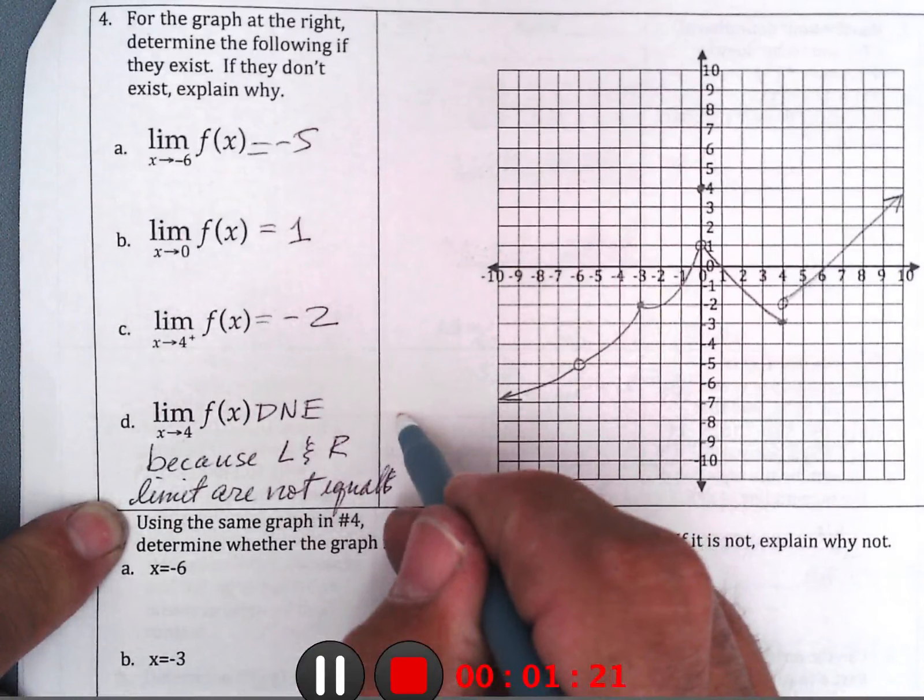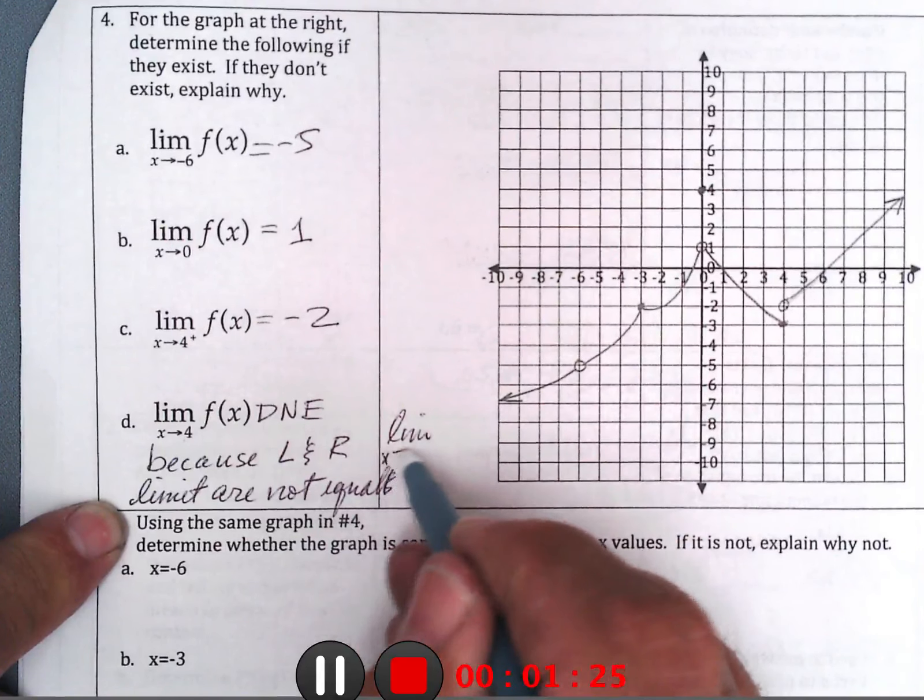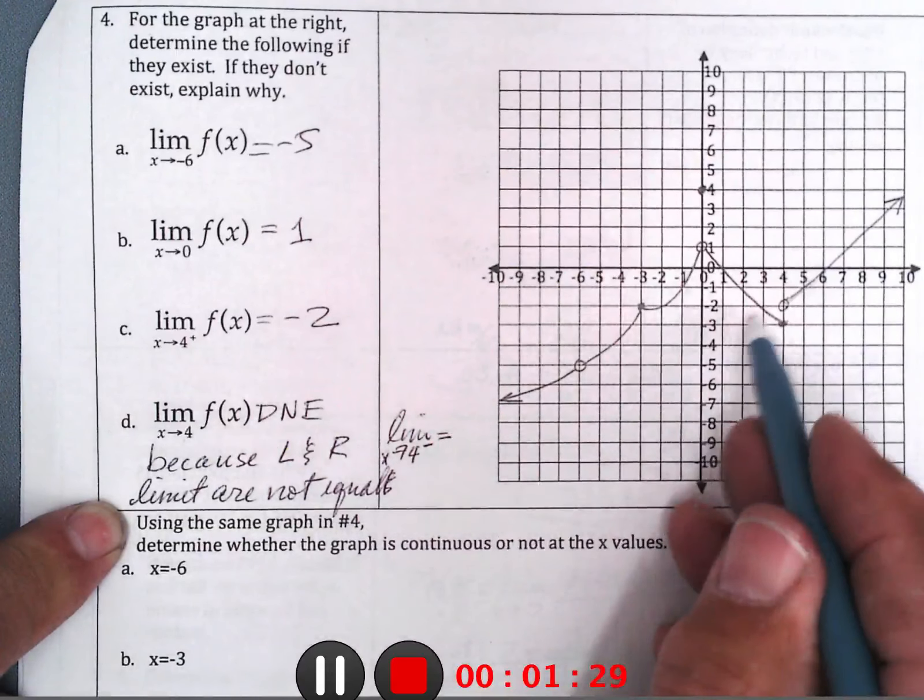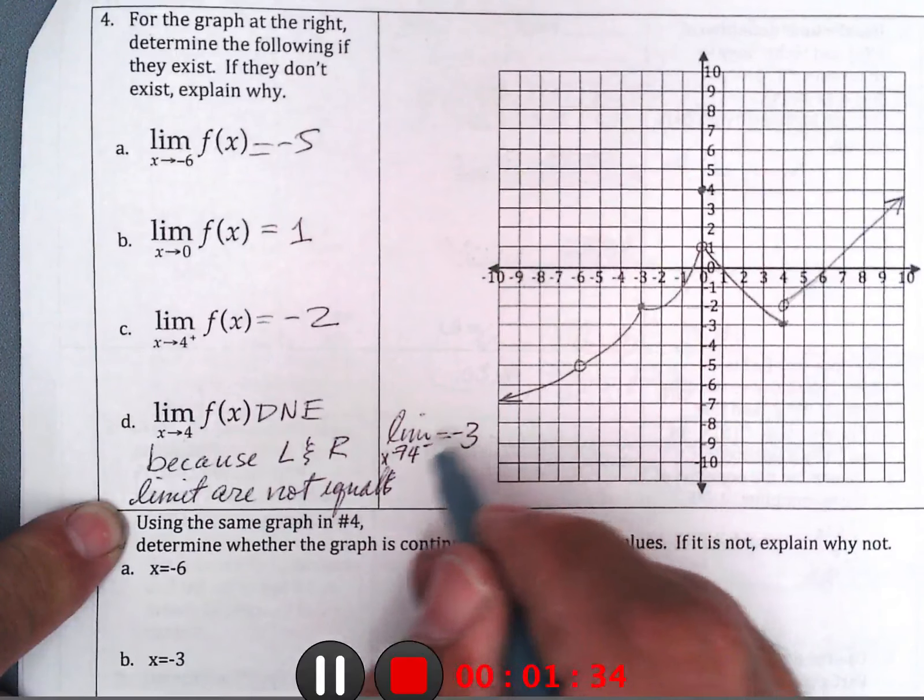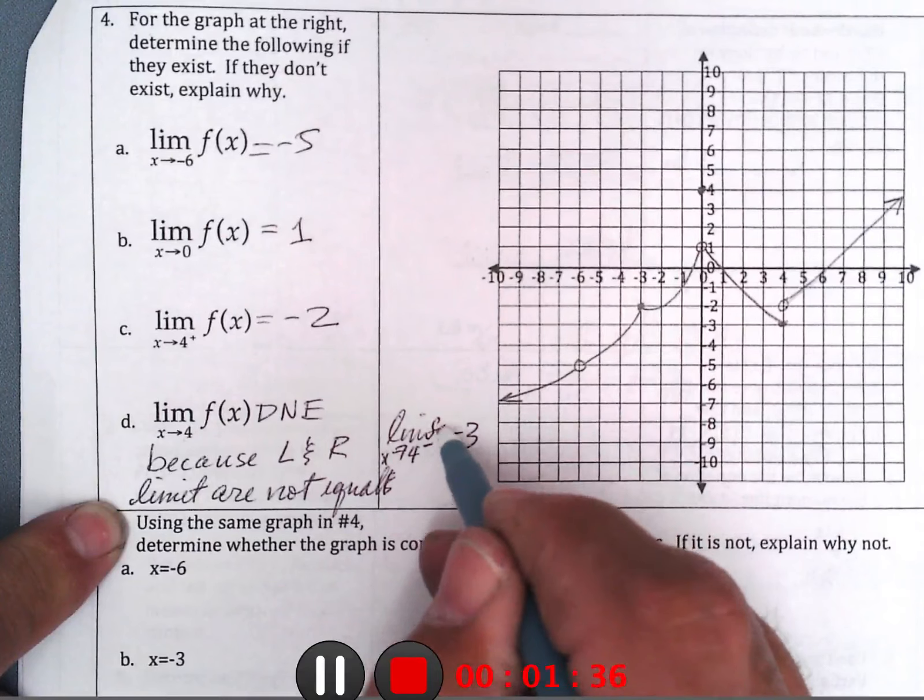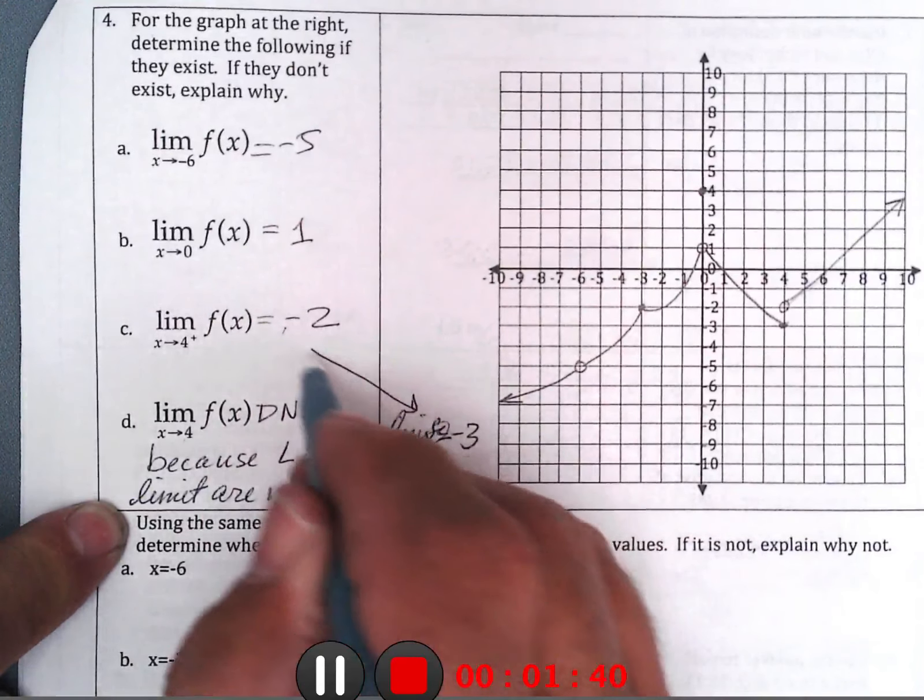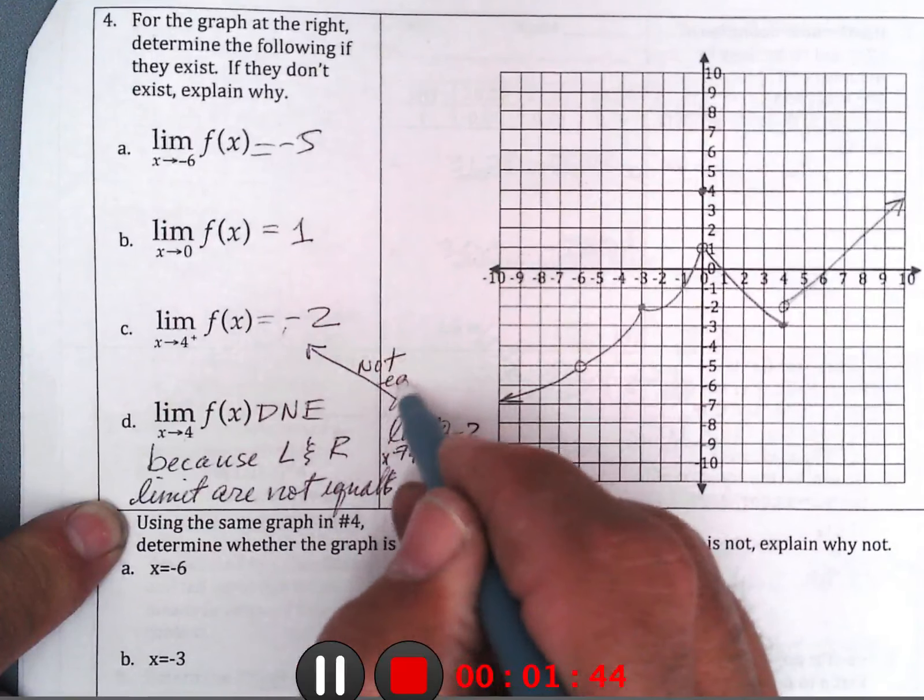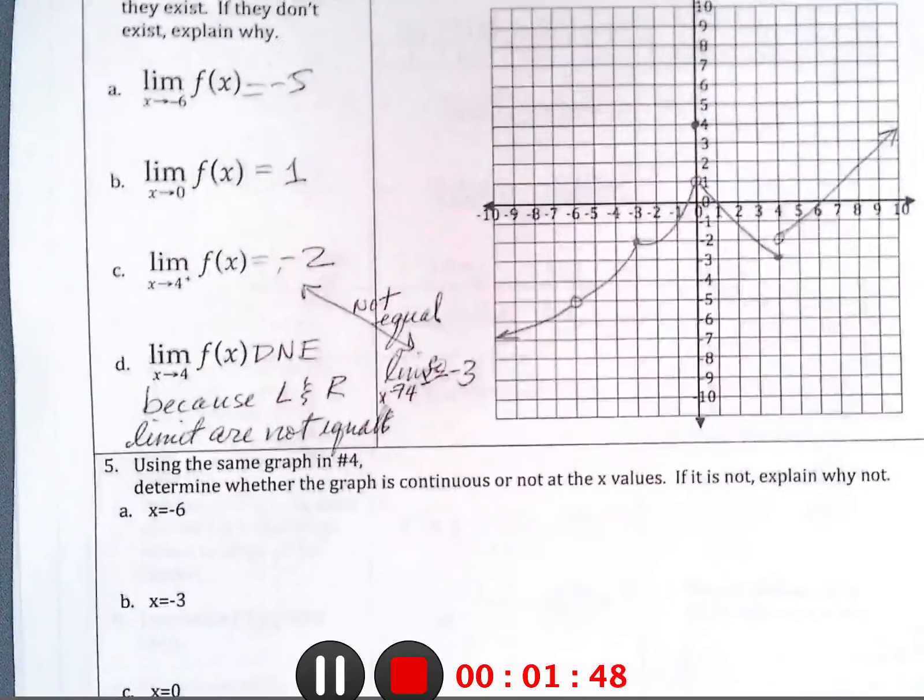In other words, limit as x approaches 4 from the negative side equals, from the negative side approaches, negative 3. And up here, it was negative 2. These two are not equal. Okay. And 5 is related, so I'm going to go right on to 5.